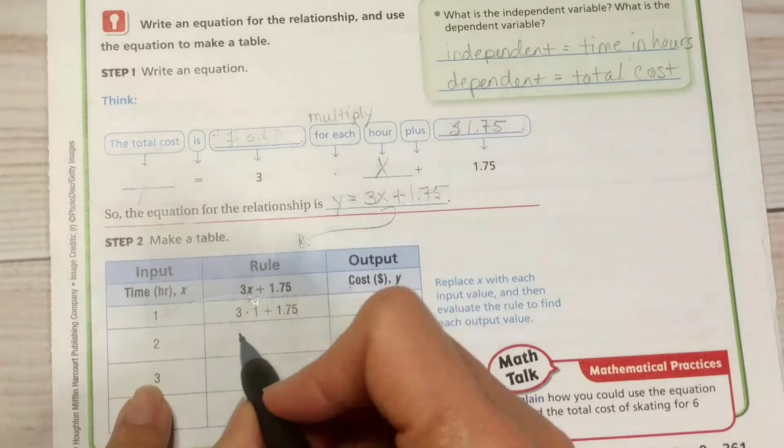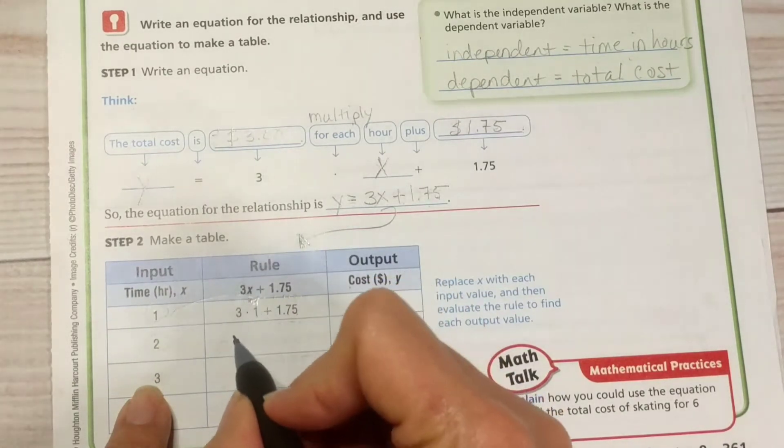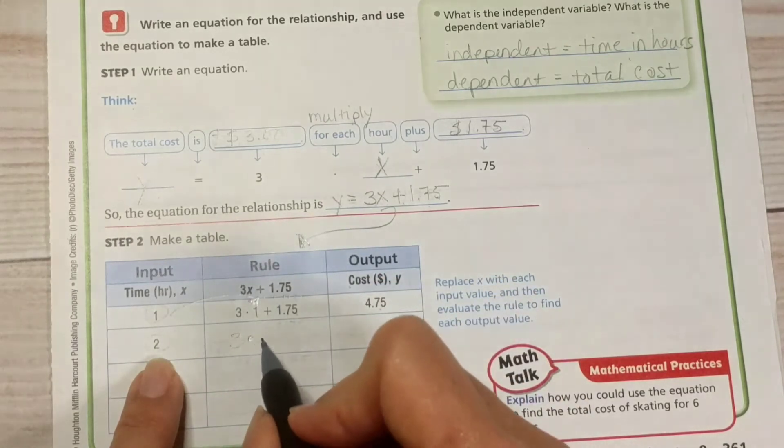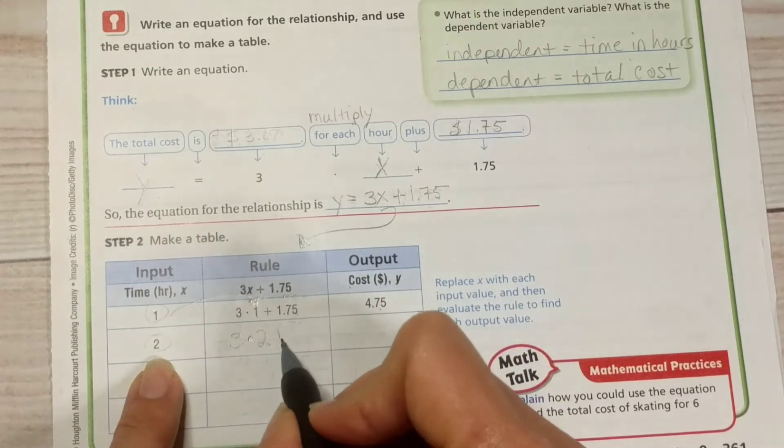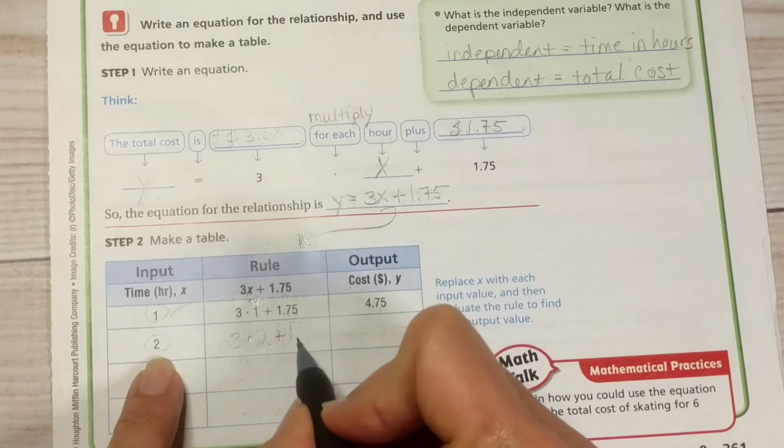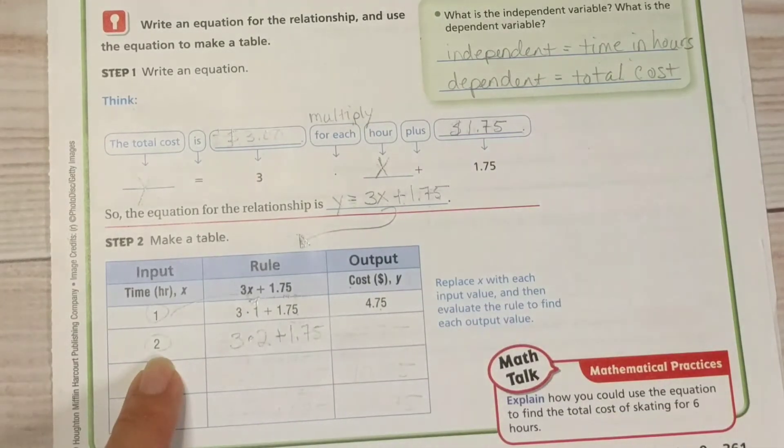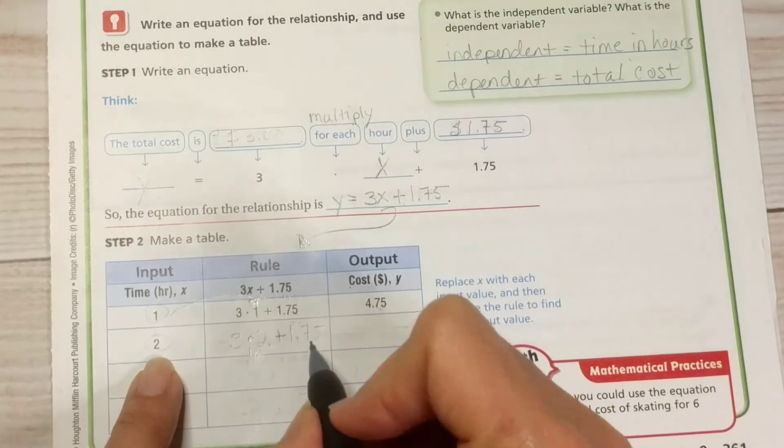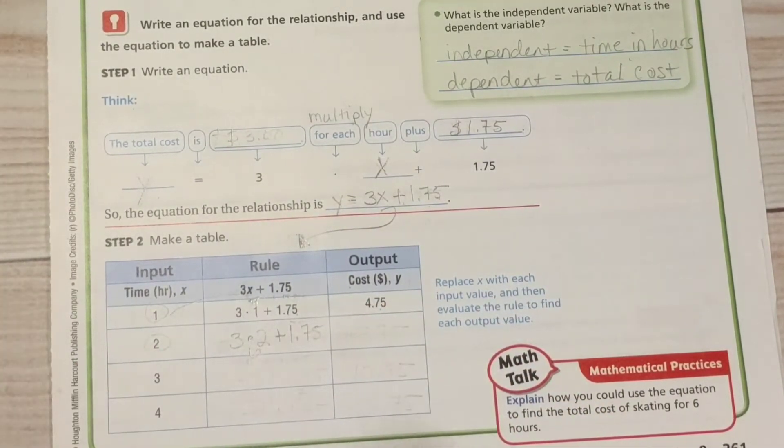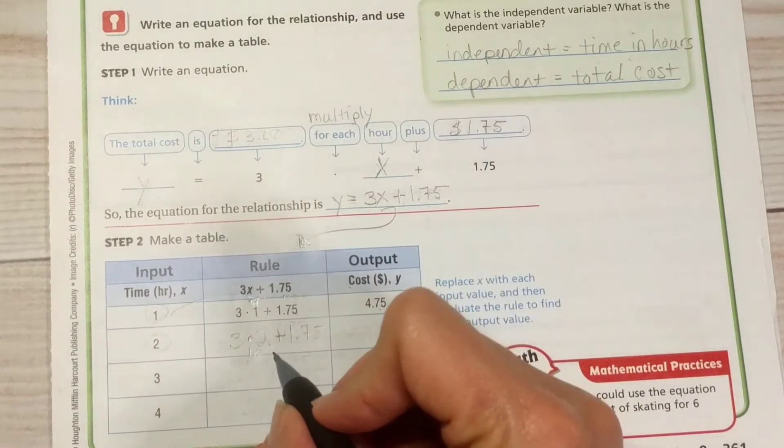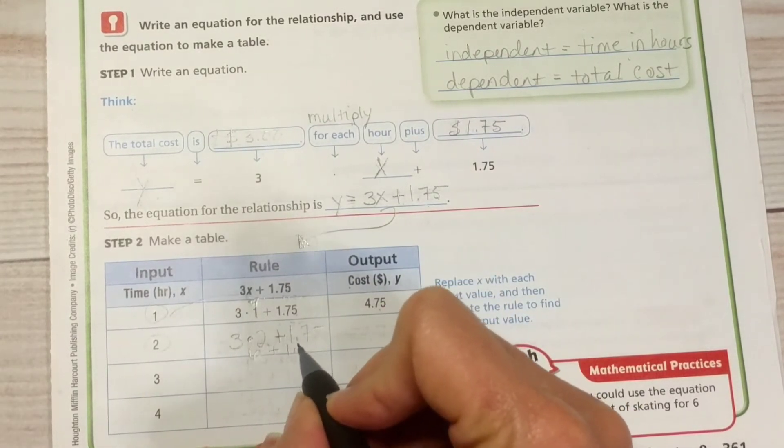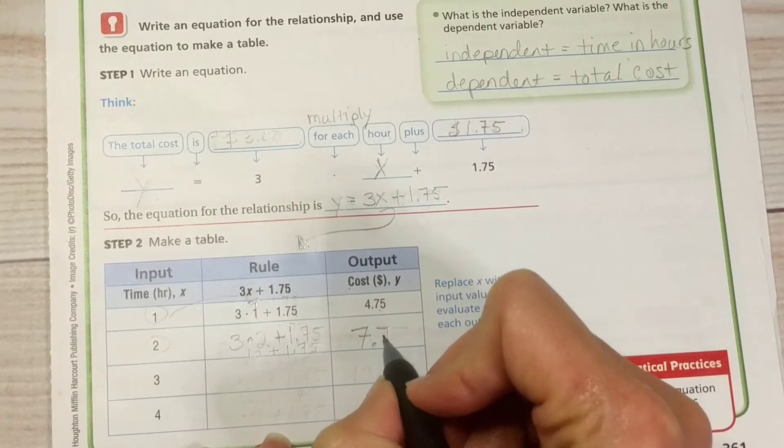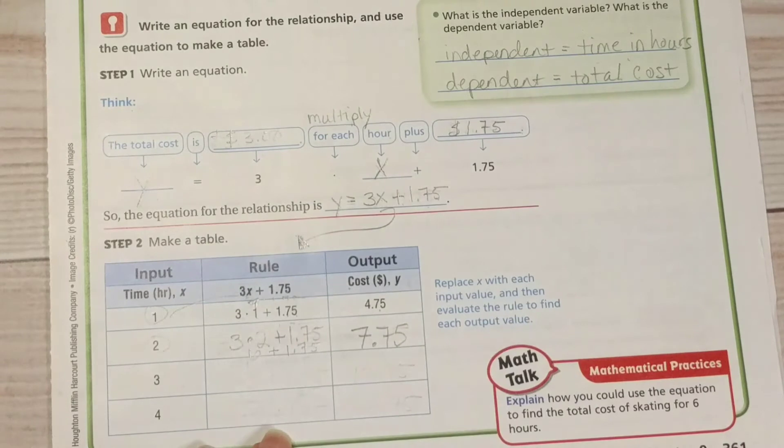Alright, let's take this 2 and put it in for x. So we have 3 times 2 plus $1.75. 3 times 2 is 6. Remember, according to order of operations, you do multiplication before addition. 6 plus $1.75 gives me $7.75 total.